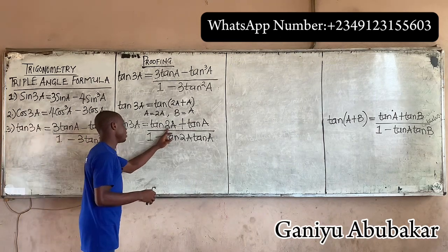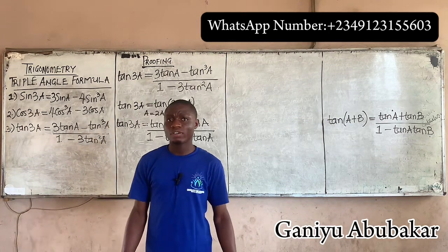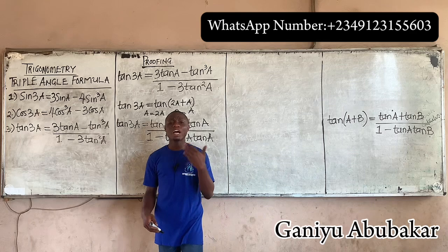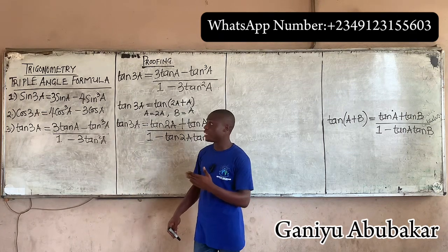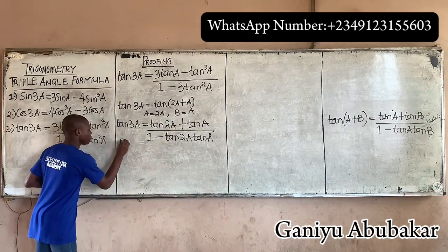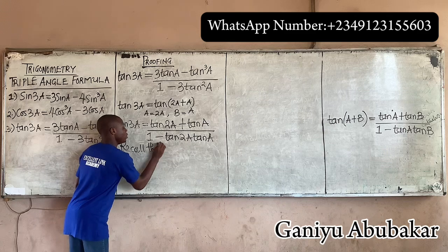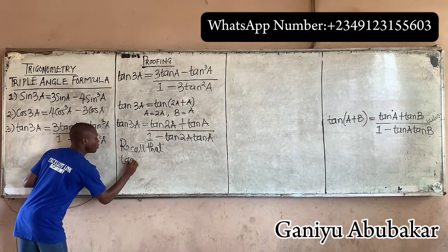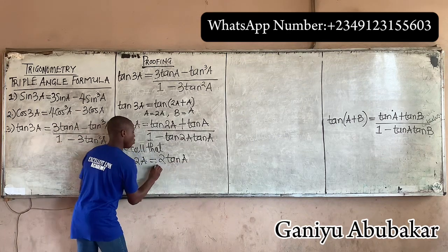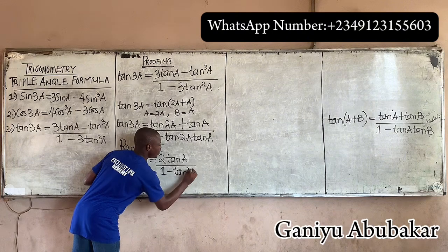At this point I can see tan(2a), and tan(2a) has its own expression. The double angle concept is from those concepts we used to derive sin(3a) and cos(3a) in the last class. So recall that the expression for tan(2a) is equal to 2tan(a), all over 1 minus tan²(a).